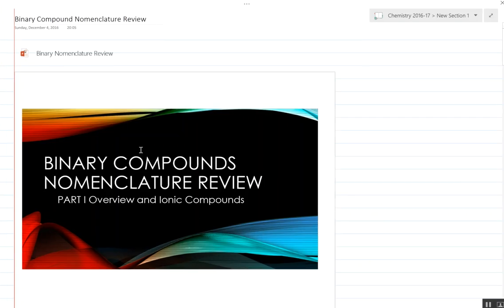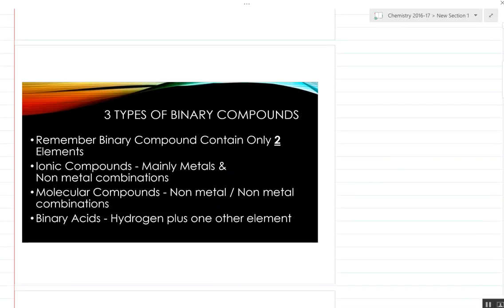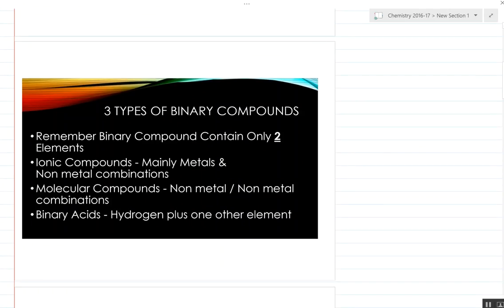Okay, we're going to record part one of the review: binary compound nomenclature review and ionic compounds. Just to review really quick, there's three types of binary compounds: ionic compounds that are mainly metal and nonmetal combinations, molecular compounds that are nonmetal-nonmetal combinations, and binary acids. In this first video we're just going to deal with the first type, the ionic compounds.